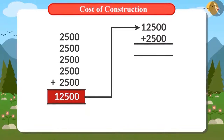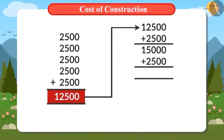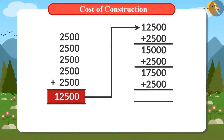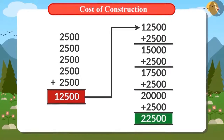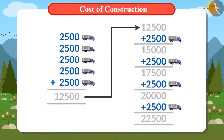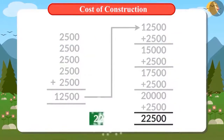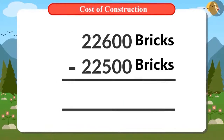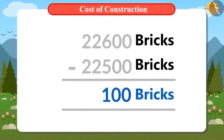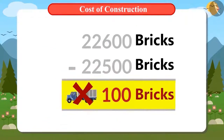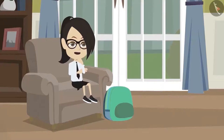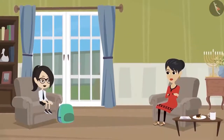So we will keep adding 2,500. Adding for the 6th time gives 15,000; the 7th time gives 17,500; the 8th time gives 20,000; and the 9th time gives 22,500. Even after ordering 9 trucks, we are still 100 bricks short. The whole truck will not be called for just 100 bricks, so how will we buy the remaining 100? Vandana decides to ask her mum.